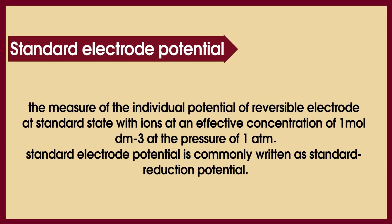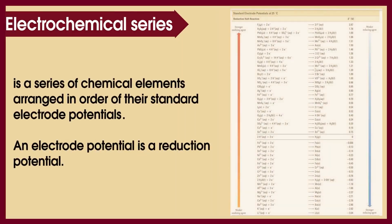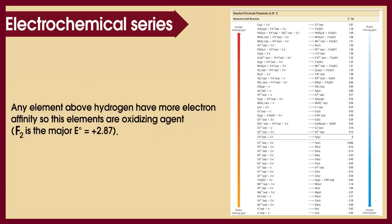To know more about standard electrode potential, we must know about the electrochemical series. The electrochemical series is a series of chemical elements arranged in order of their standard electrode potential. Standard electrode potential is commonly written as standard reduction potential. In the electrochemical series, hydrogen is in the middle, and any element above hydrogen has more electron affinity, so those elements are oxidizing agents or in oxidized form, while any element below hydrogen has less electron affinity, so those elements are reducing agents or in reduced form.